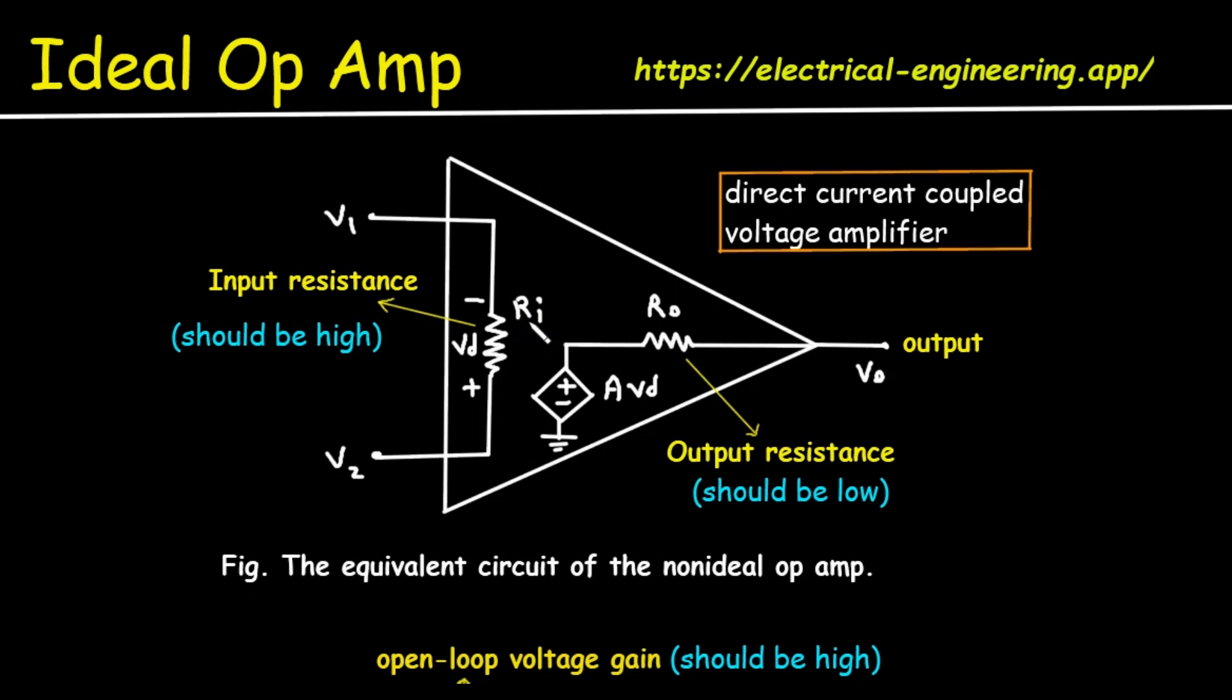Next is input resistance RI. This RI represents input resistance. The image notes that the input resistance should be high. Why should it be high? A high input impedance is crucial because it means the Op Amp draws almost no current from the circuit connected to its input. Think of it like a perfect voltmeter—it measures a voltage without disturbing or loading down the circuit it's measuring. In real Op Amps, RI is very high, often in the Mega Ohm or even Giga Ohms.